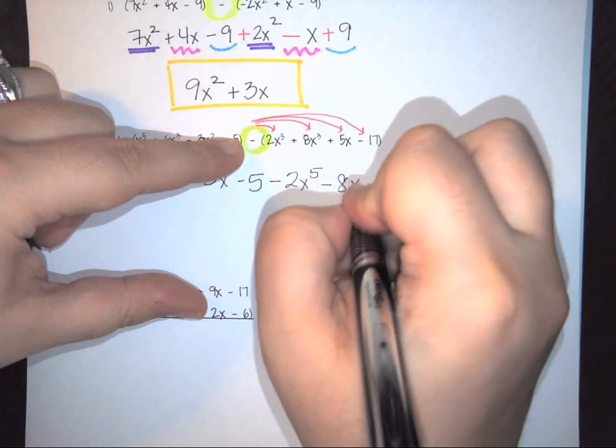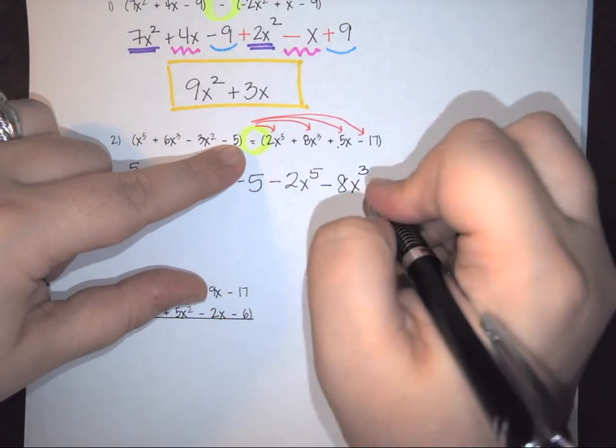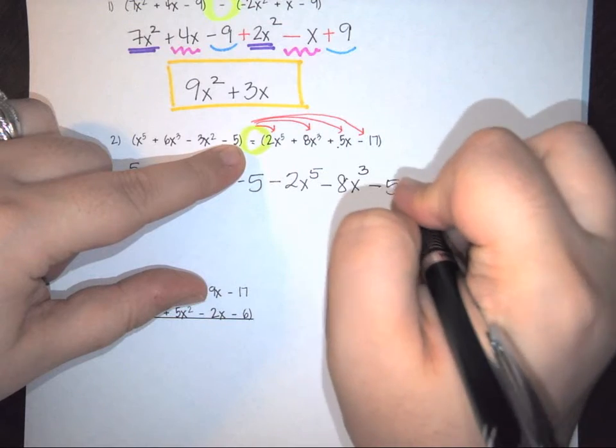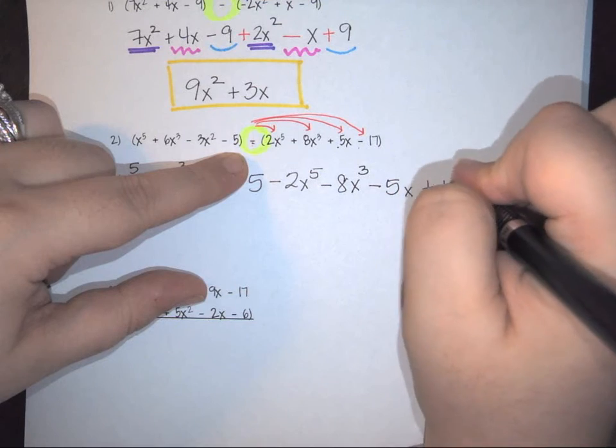I have a negative and positive. So a negative 5x. And then I have negative and negative. So this becomes a positive 17.